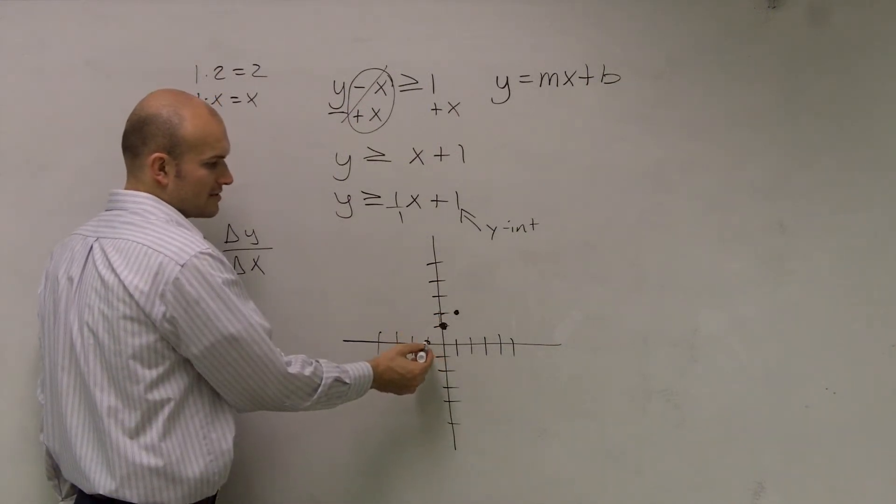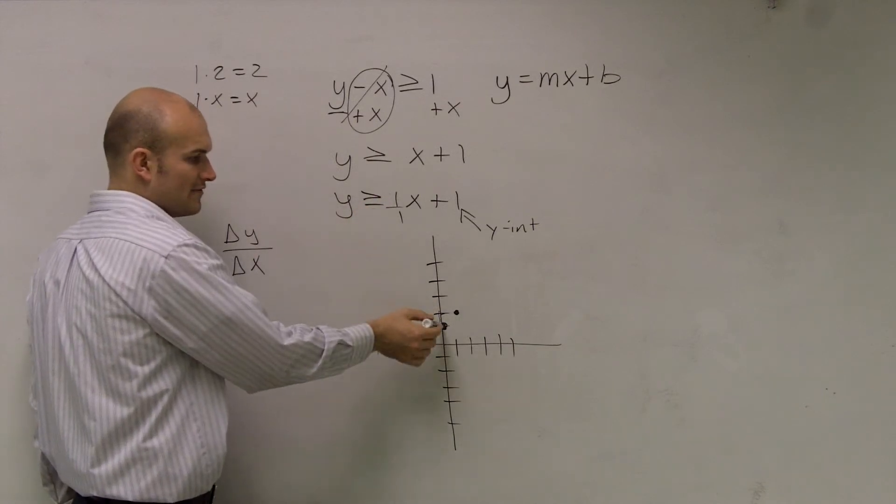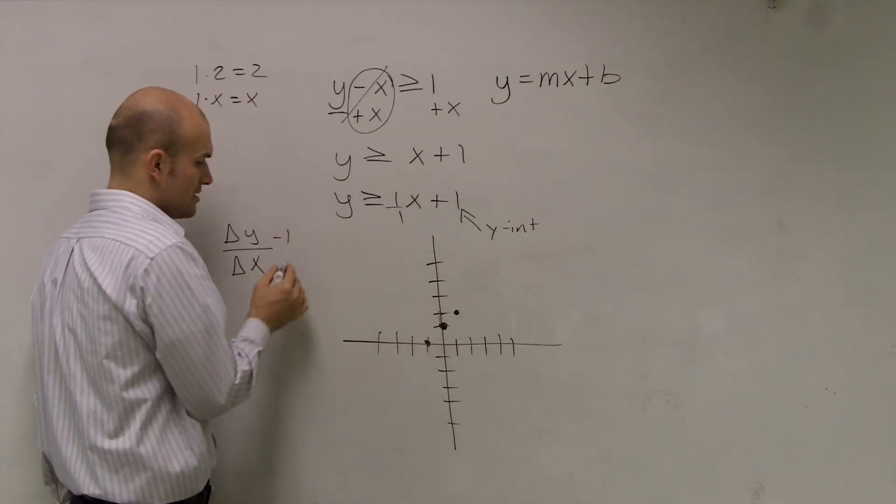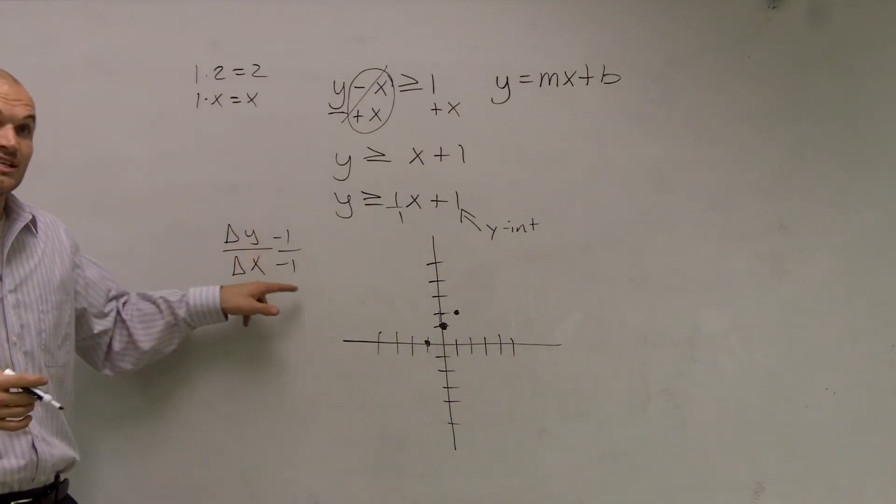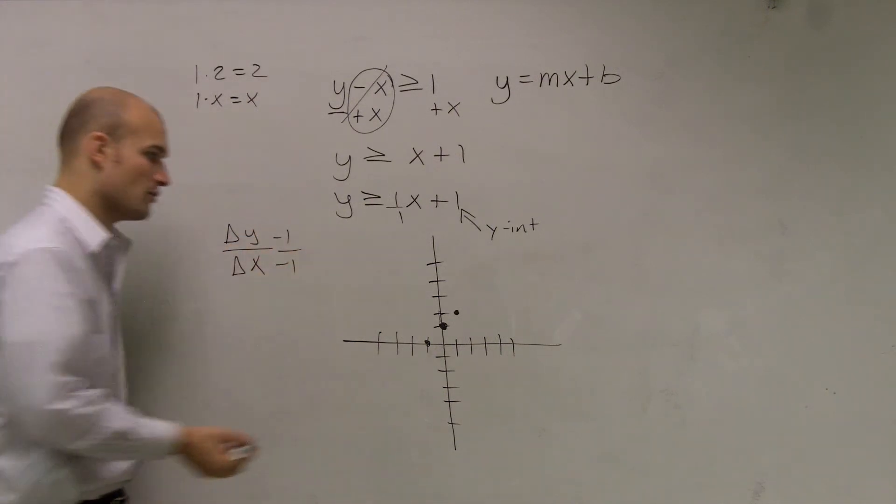Notice, you could also go down and to the left. Because a negative divided by a negative, if I went down, that'd be a negative 1, right? If I went to the left, that'd be a negative 1, Walter. So a negative 1 divided by negative 1 is still going to give you a positive 1.